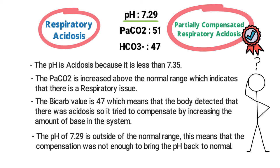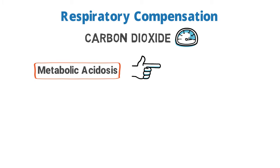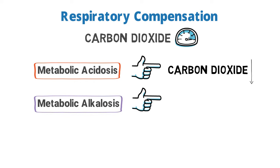A partial compensation only occurs with an abnormal pH, because the compensation is not enough to bring the pH back to normal. For it to be fully compensated, the pH has to fall within the normal range. Now let's talk about respiratory compensation. When we have a metabolic problem, always remember that our respiratory system will compensate by regulating the amount of carbon dioxide in the blood. For example, when we have metabolic acidosis, the body will compensate by decreasing the amount of carbon dioxide. When we have metabolic alkalosis, our body will do the opposite — it will try to compensate by increasing the amount of carbon dioxide in our system.